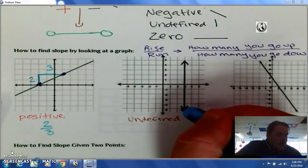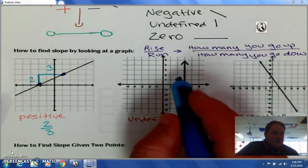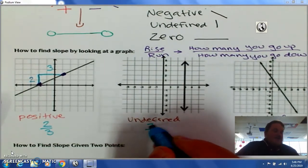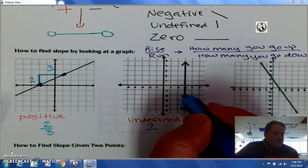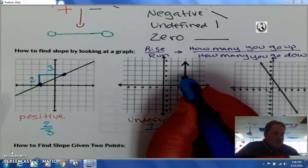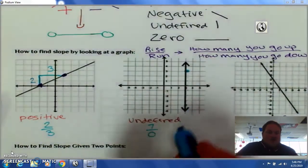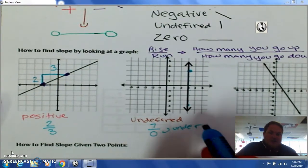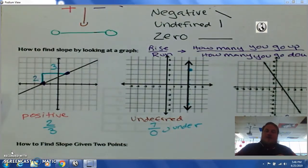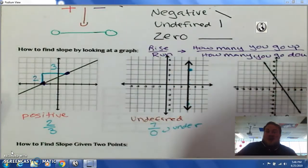Now for this one, I go up one, two, three, four... I could go up seven from this point to that point, but I go over zero. So that's called an undefined line when zero is under the fraction bar. If you get a zero underneath the fraction bar, it's undefined — because you can go up as many times as you want, but you can't go over.